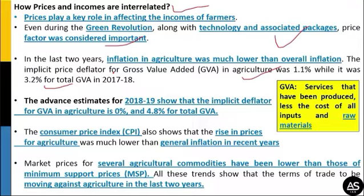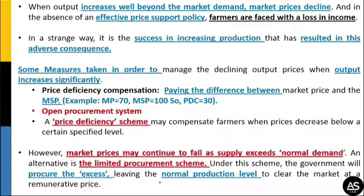Advance estimates for 2018-19 show GVA for agriculture is 0% while total GVA is 4.8%. The Consumer Price Index also shows that the rise in agricultural prices is much lower than general inflation in recent years. Market prices for several agricultural commodities have been lower than their Minimum Support Price, and terms of trade have been moving against agriculture in the last two years.